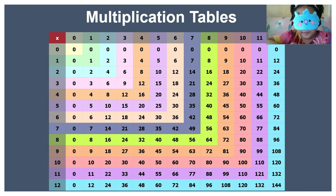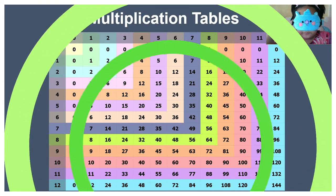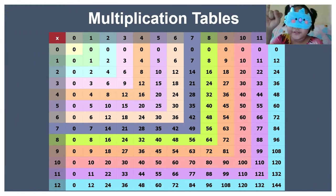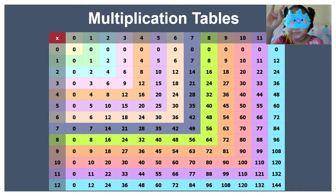3 times 8 equals 24. 3 times 9 equals 27. 3 times 10 equals 30. 4 times 1 equals 4. 4 times 2 equals 8.